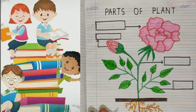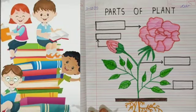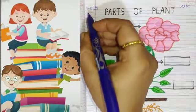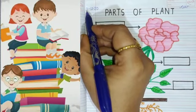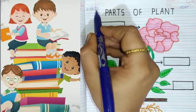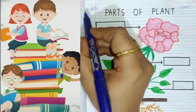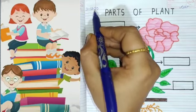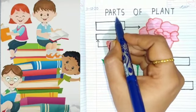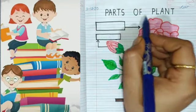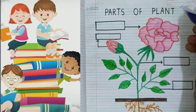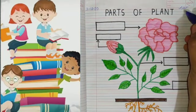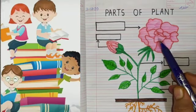Good morning students, welcome to EVS class. All of you open your EVS notebook and write down the date: 3-12-20, 3rd December 2020. Write down the heading 'Parts of Plant.' Here you have to write down CW. See students.